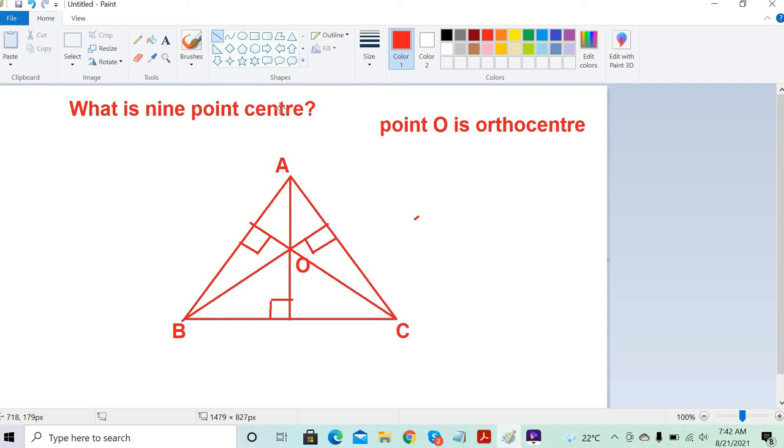We will see that the ortho center and the circum center give us two points. When you connect these two points, you get a line segment. Let's draw the perpendicular bisector for BC. Then similarly, we will draw the perpendicular bisector for AC. And similarly, we will draw the perpendicular bisector for line AB.